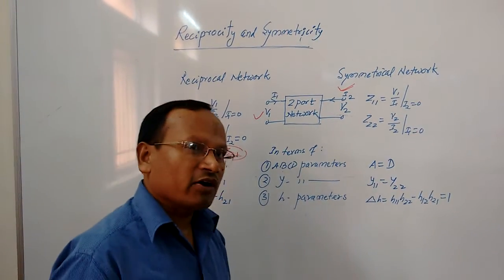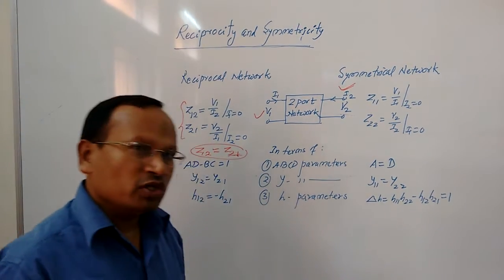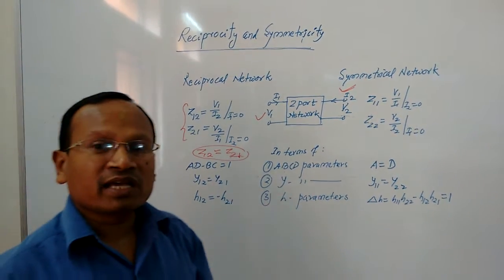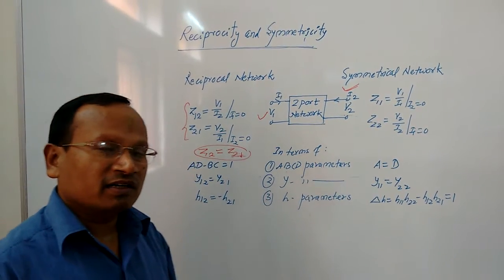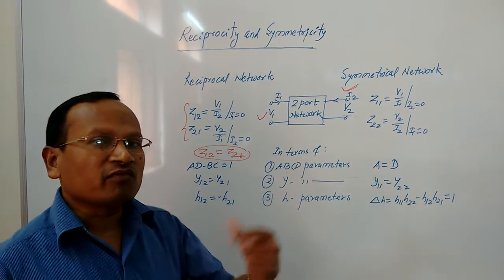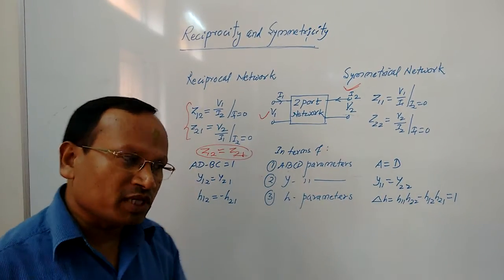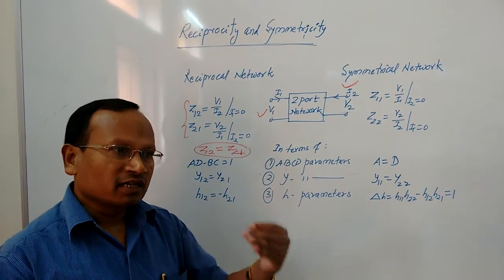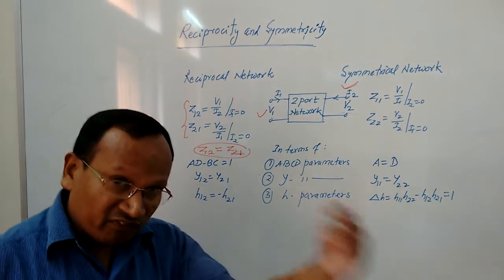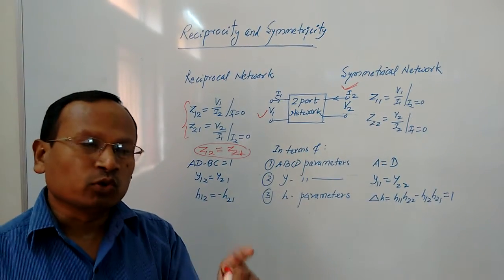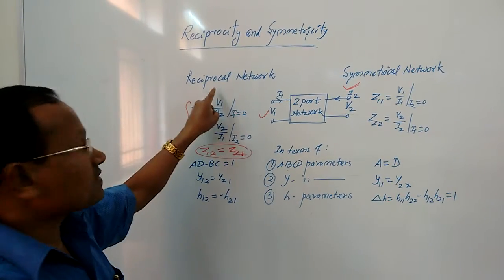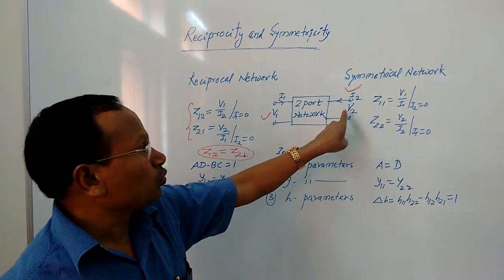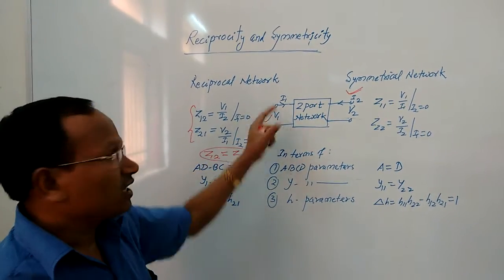In very simple words: we use the term 'reciprocate' very commonly. When a friend sends us a greeting message, in reply we can simply write 'I reciprocate U2,' meaning with the same feeling and emotion, I am sending the message back. Reciprocal network is a network where you send excitation at one port, get a response at the other, then give excitation at the other and get a response here — and that ratio always remains the same.